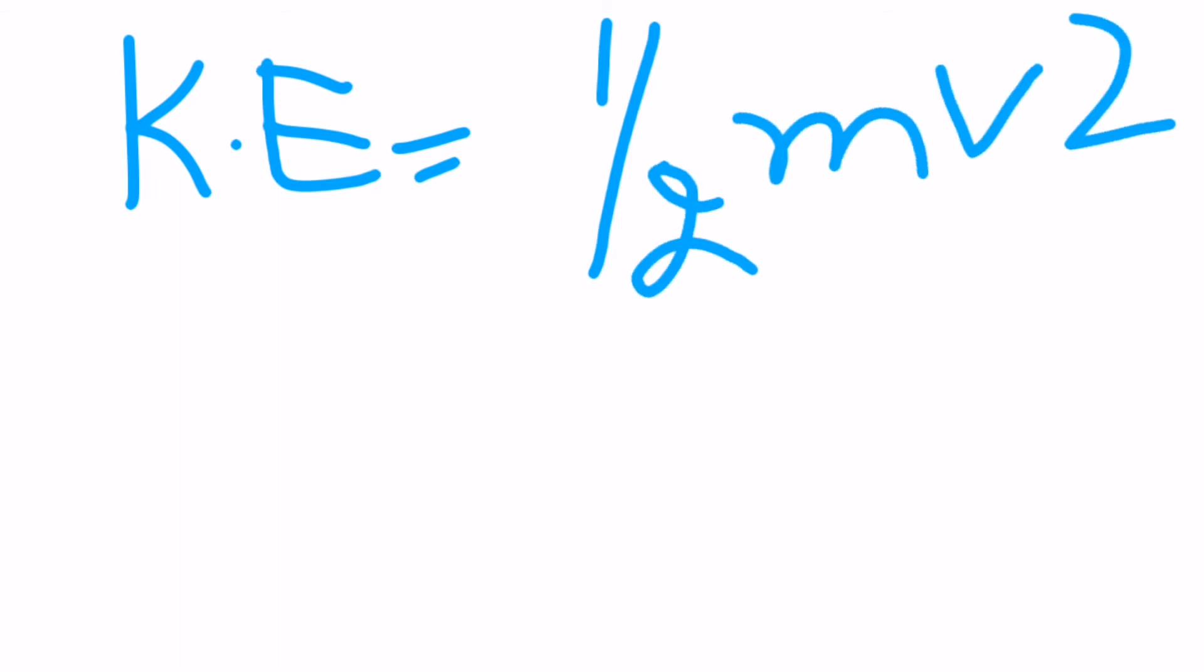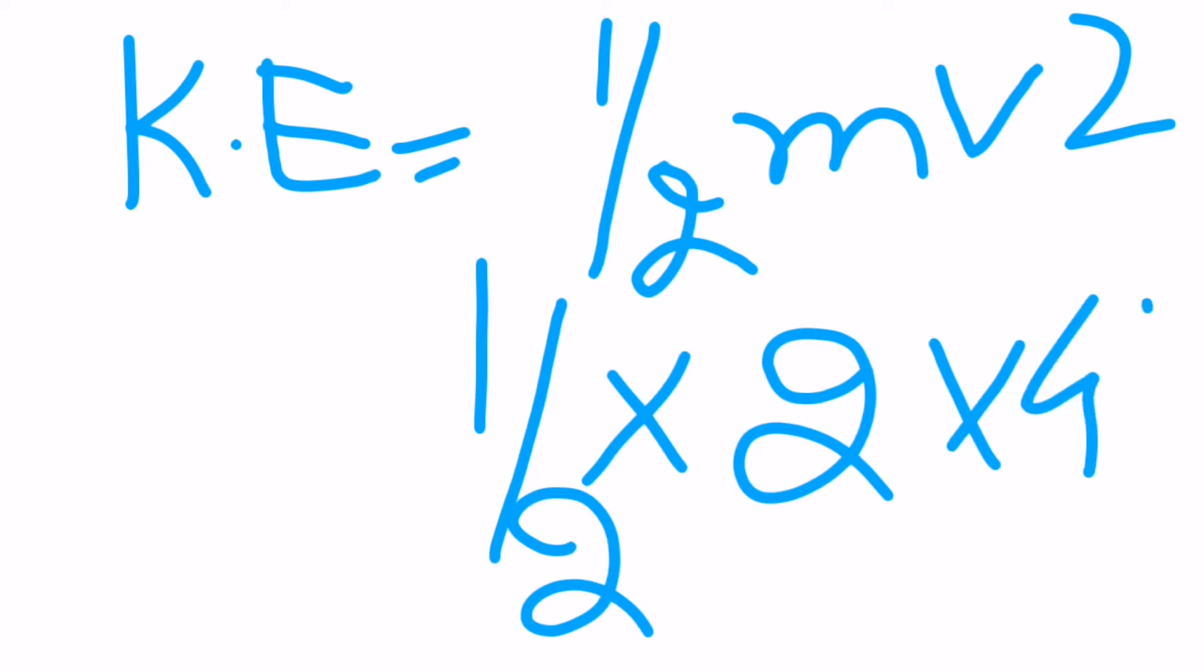The formula of kinetic energy is KE = 1/2 mv². The mass given to us was 2, so 2 into 1/2, and v² is 4². These two will be cut, and when we take the square of 4, we get 16.